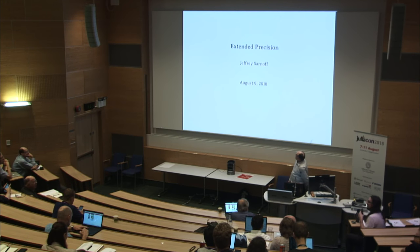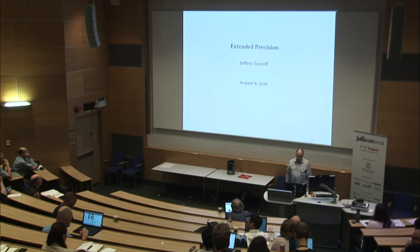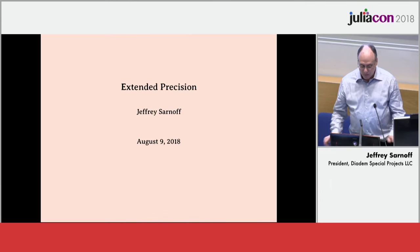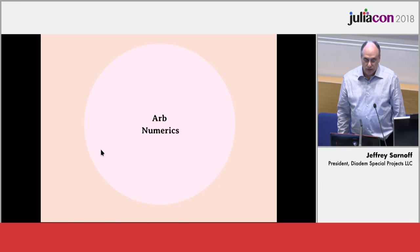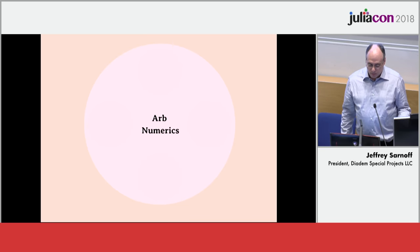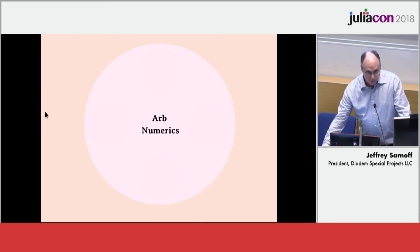Our last talk of the day is Jeffrey Sarnoff. He'll be talking about Extended Precision. I am going to talk about Extended Precision, particularly a new package I'm working on called ArbNumerics, which is built around an underlying C library called Arb, written by Frederick Ohansson. Thanks to him, and thanks to Bill Hart and Thomas Hoffman of NEMO fame for the help they've given me.